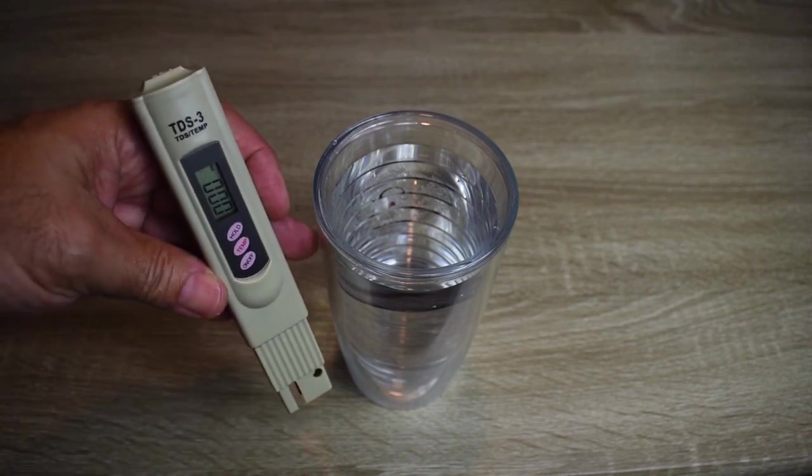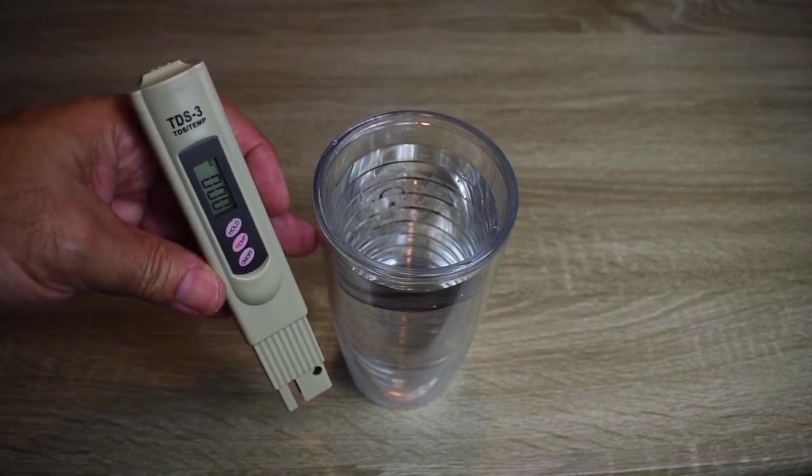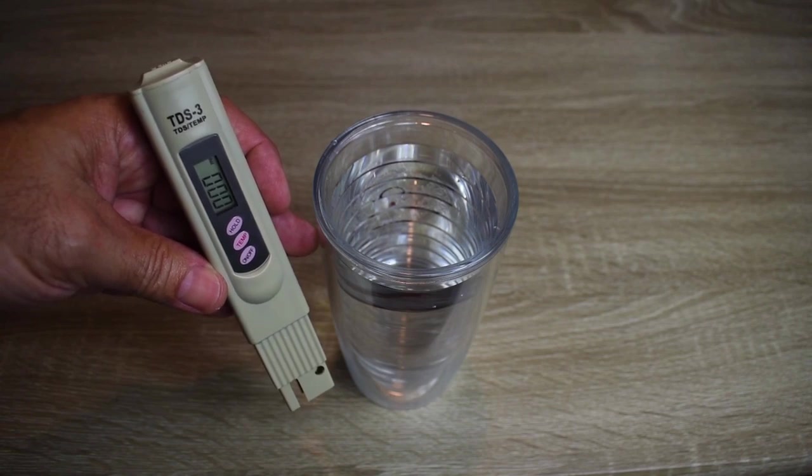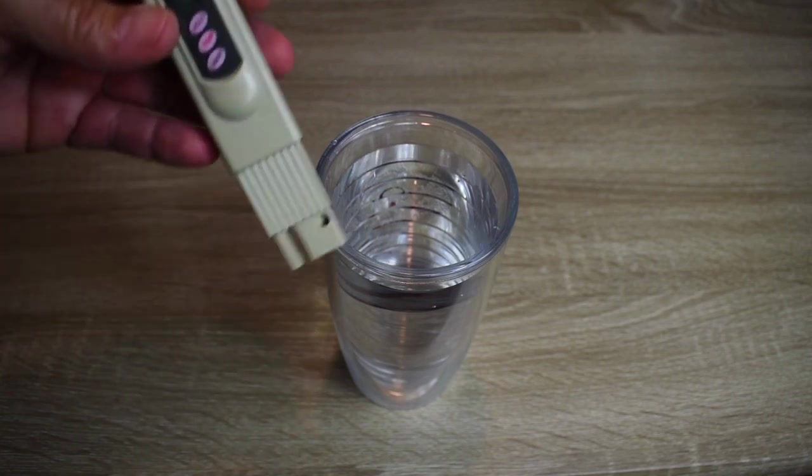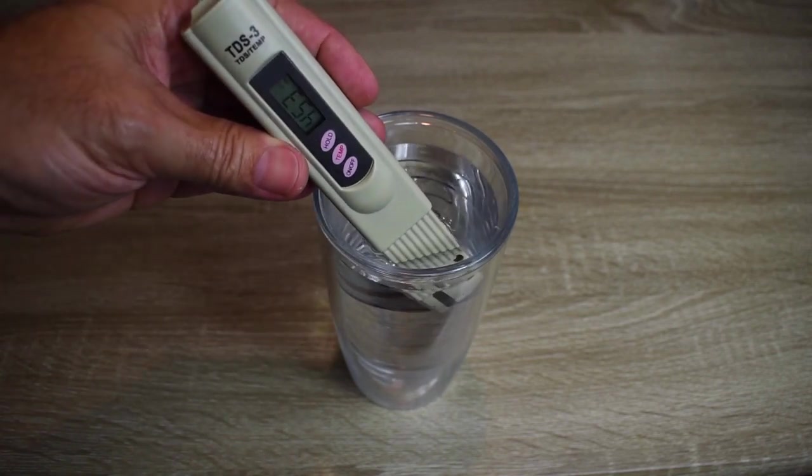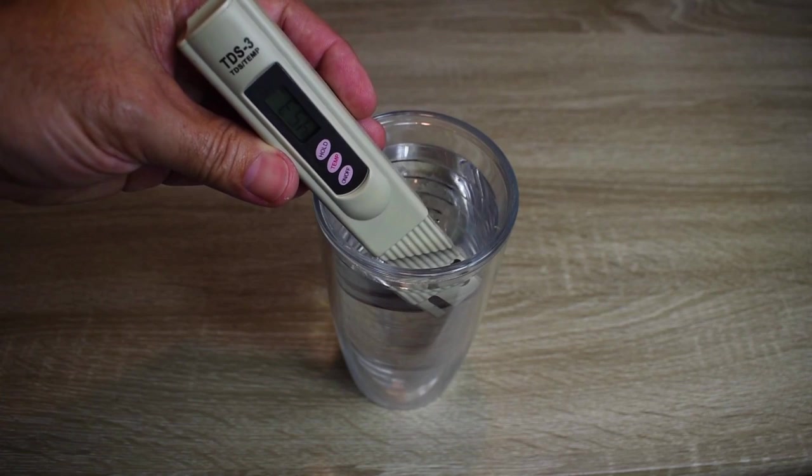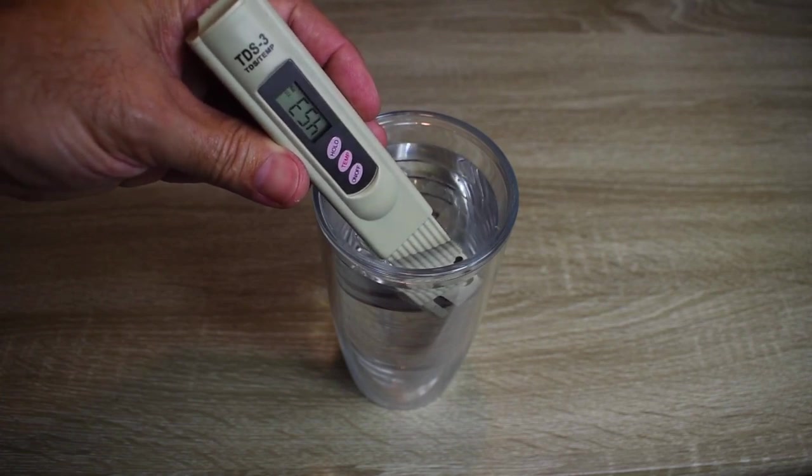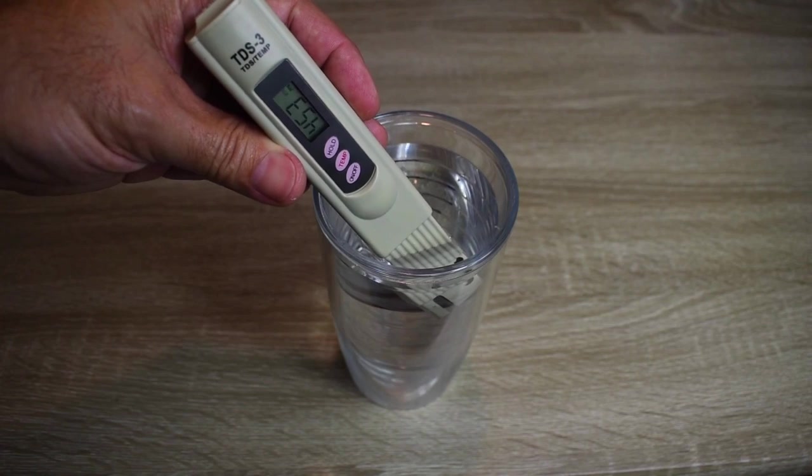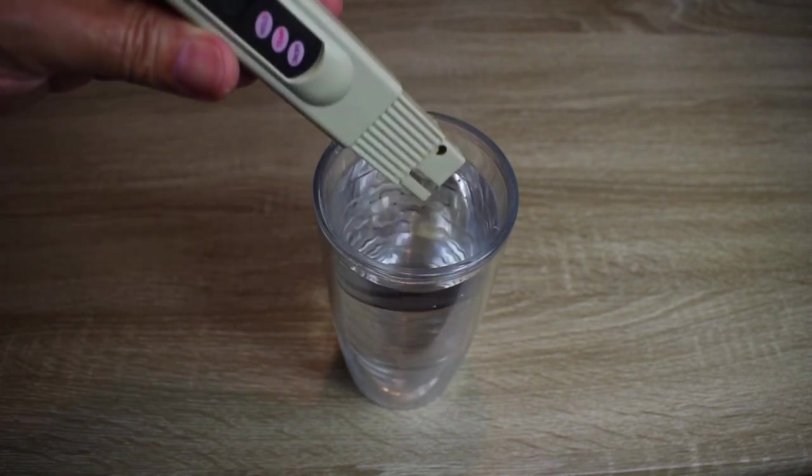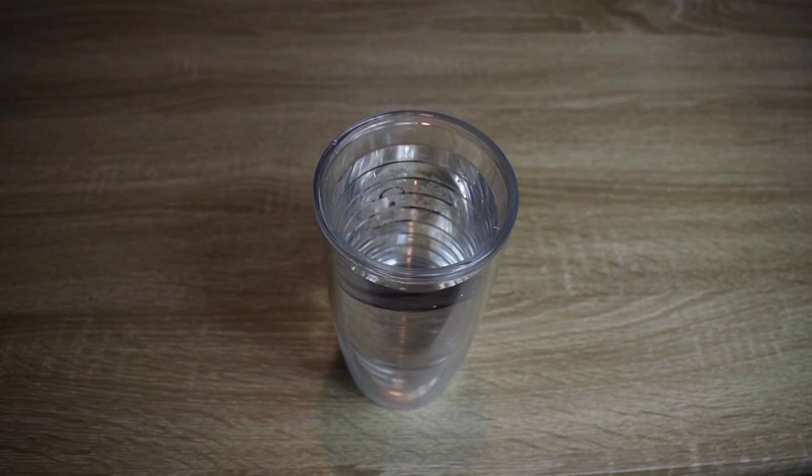All right, let's take a reading. If this was purified water, distilled, or reverse osmosis, the reading would be very close to zero. So we're going to see what it is right now. Put it in. Hopefully you can see that. 453 and it's flashing times 10. So that's 4,530 for total dissolved solids.